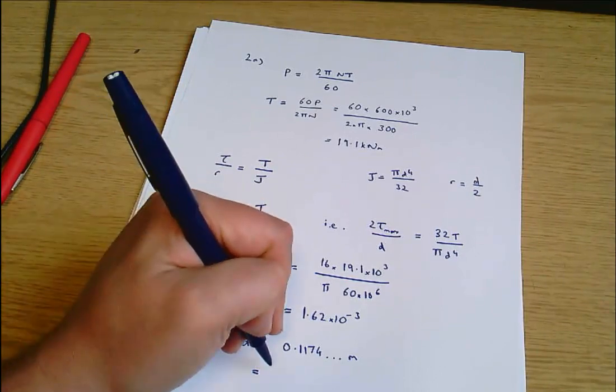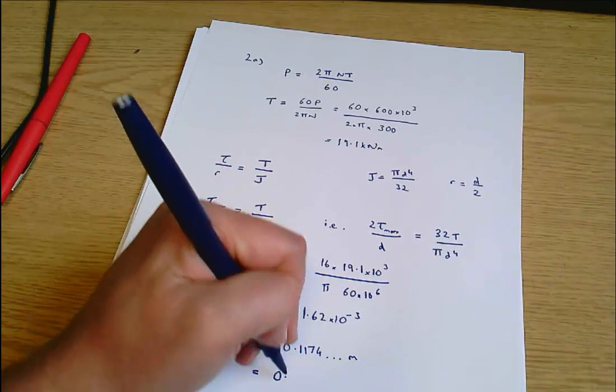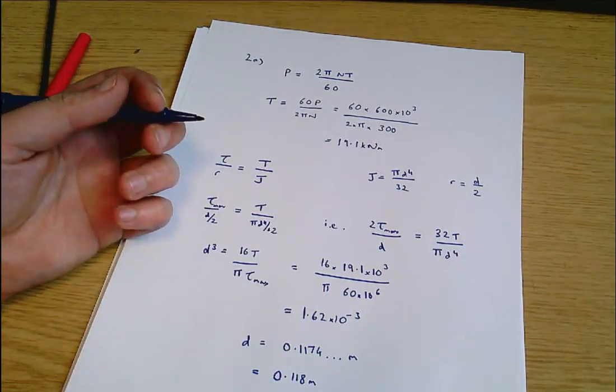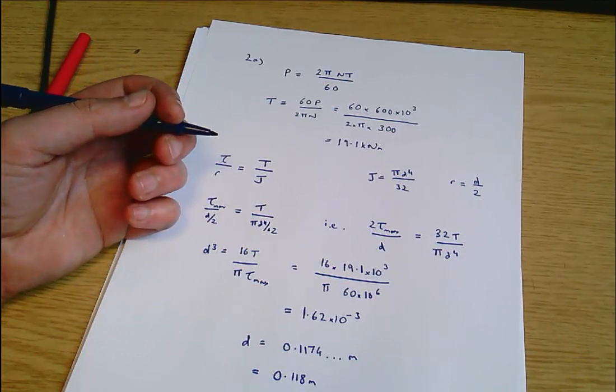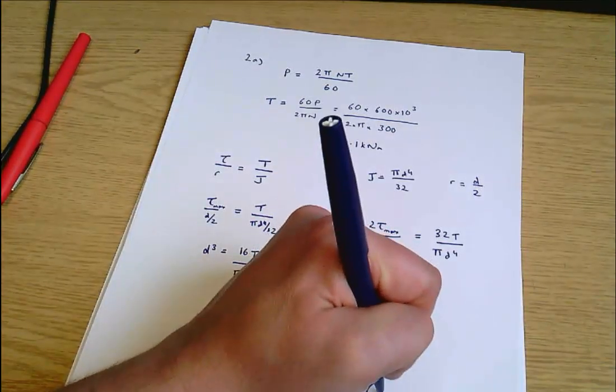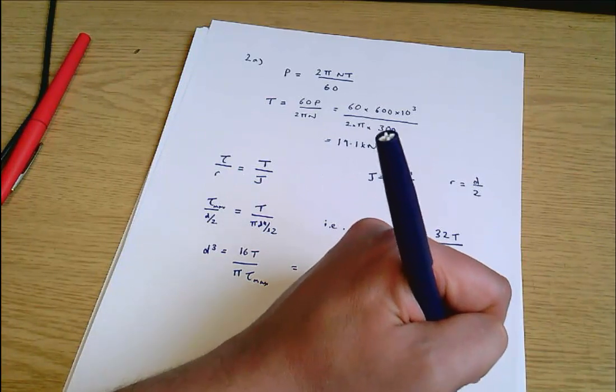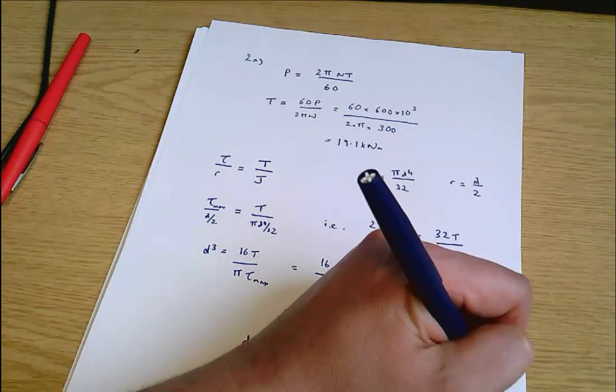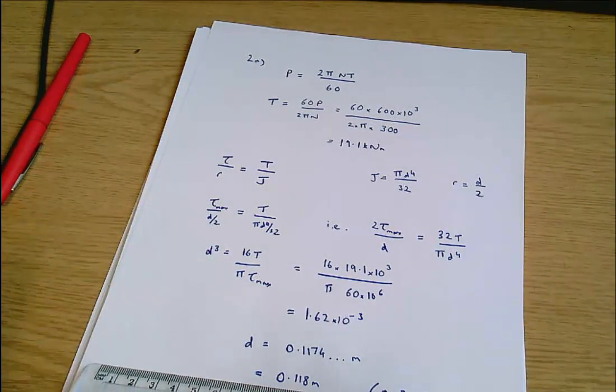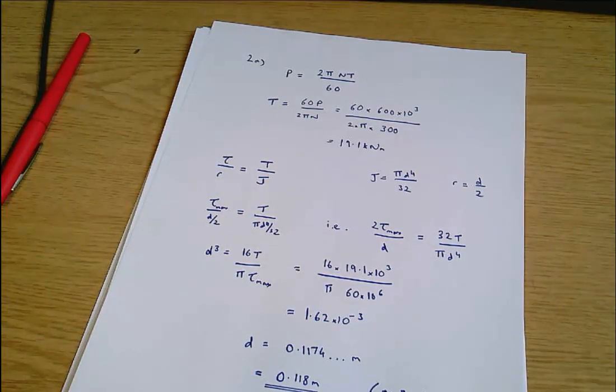I'm going to round up so that I go over rather than under the diameter required, and therefore I know I won't exceed the allowable torsional shear stress. I'll say that's 0.118 meters, three significant figures rounded up. And that's the shaft diameter, 118 millimeters. That is all of question 2a.